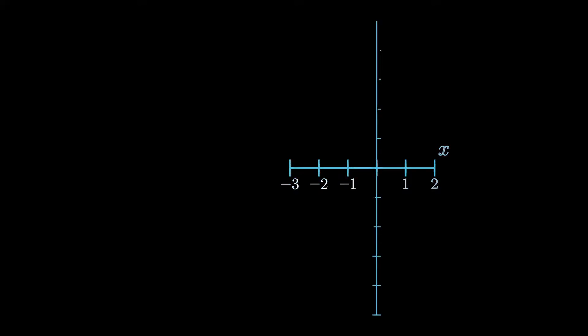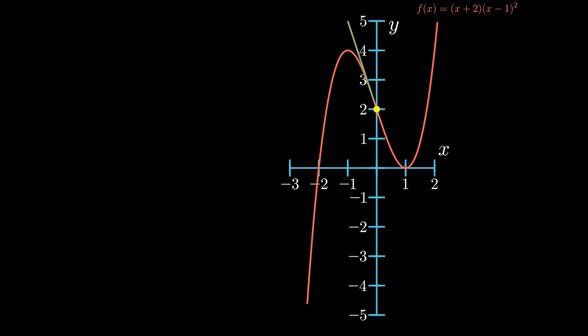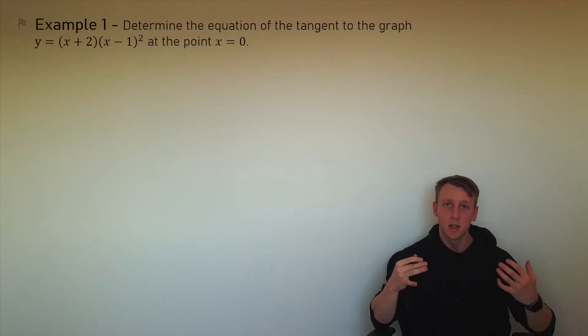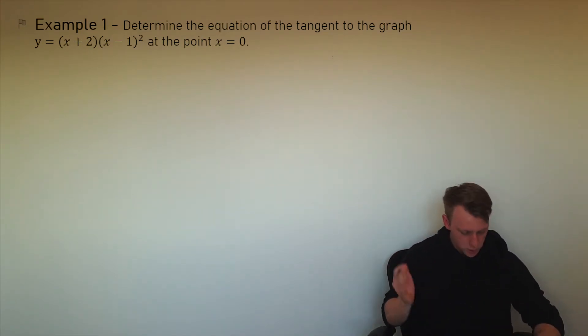So let's just have a look at this function on a graph. And we want to find the equation at the point when x is equal to 0. So we need to find out where is that going to lie on the graph and what is this tangent going to look like, just so we can get a little bit of an idea before we head off into solving the math.